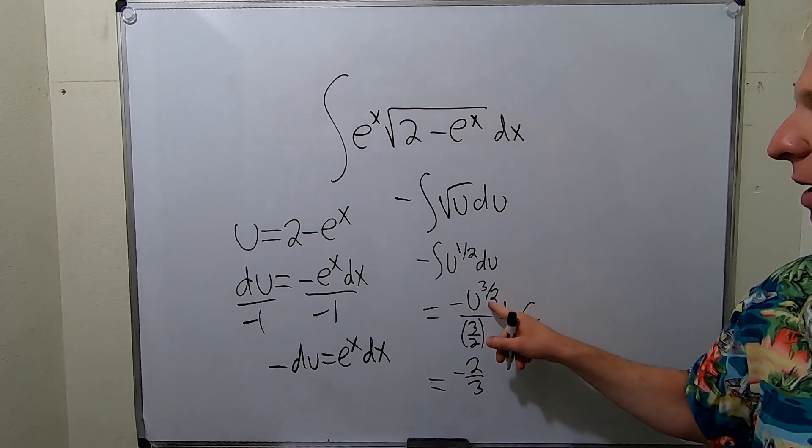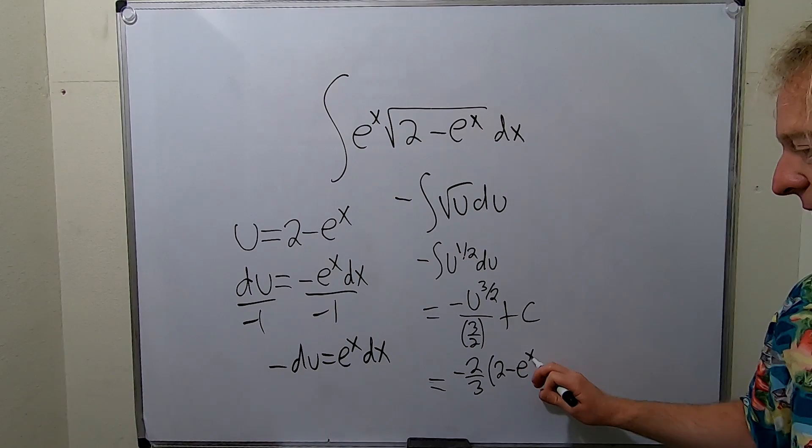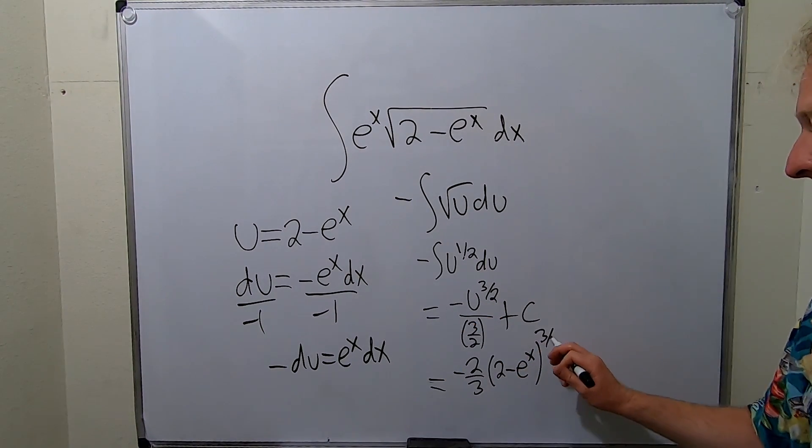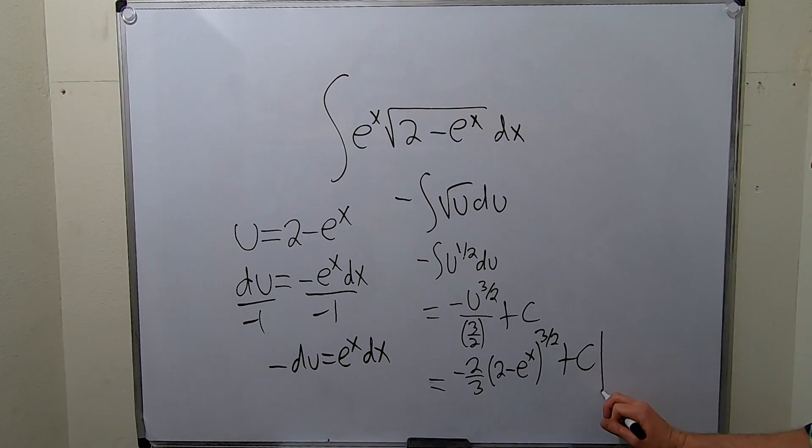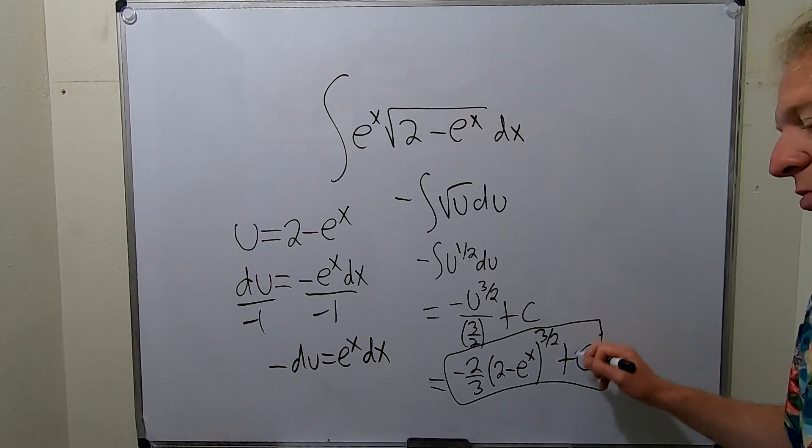And then let's plug u back in. u is this. So this is 2 minus e to the x. And then we have our 3 halves. So 3 halves. And then we have our plus and our capital C. And that would be the final answer to this problem.